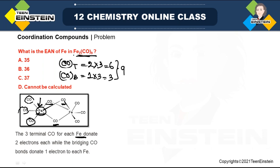For Fe, atomic number is 26. EAN is calculated by writing the atomic number of the metal, then checking oxidation state. Since CO is neutral and there are no other ligands, oxidation state is zero. Total electrons from ligands is nine, so EAN = 26 + 0 + 9 = 35. The correct option is A.